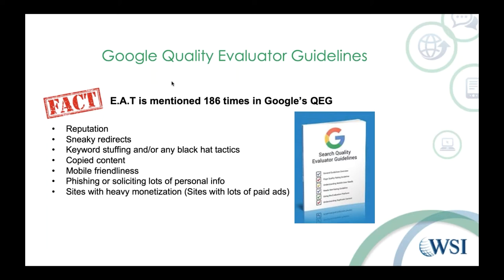Some of the top things within the guideline that Google takes very seriously: number one is the reputation of a website. Google is really looking at the reputation of your site — what are people saying about it? If there are forums stating this website doesn't refund or does bad work, or there are reviews bashing that reputation, then there's a good chance Google will not rank you. Sneaky redirects are another big one — getting people to land on your website to try to get them to transact into something else goes against what Google considers quality.